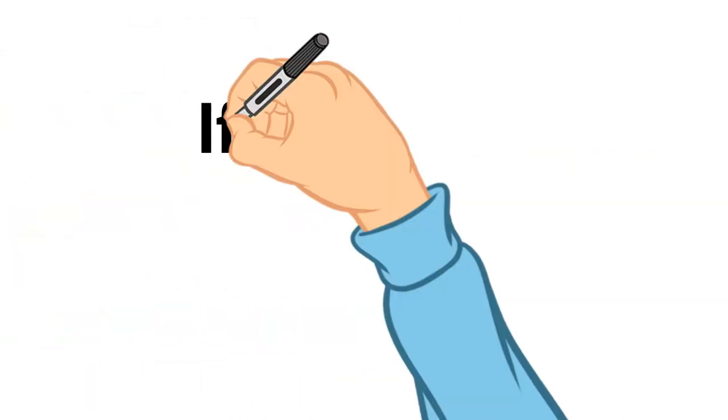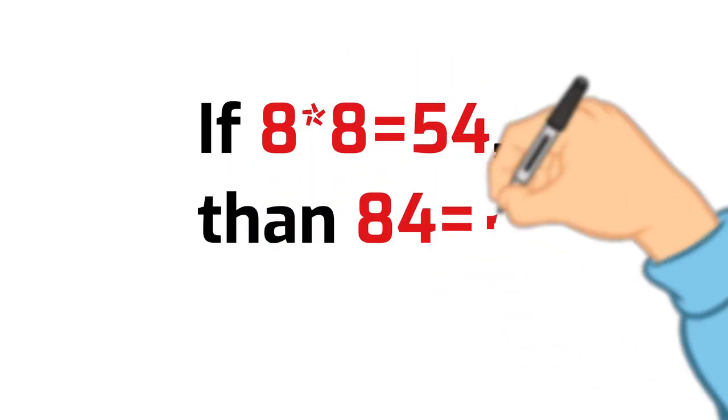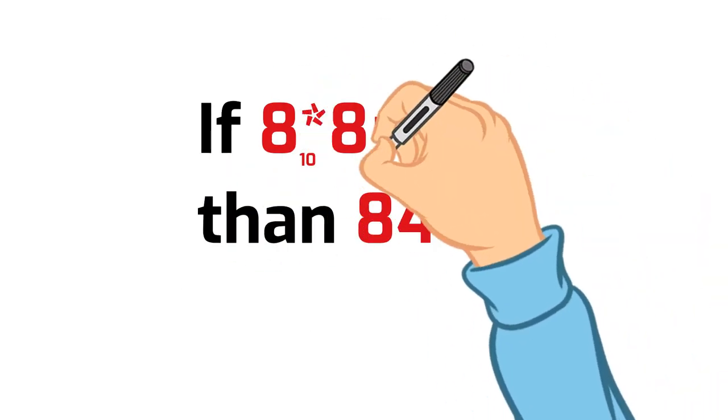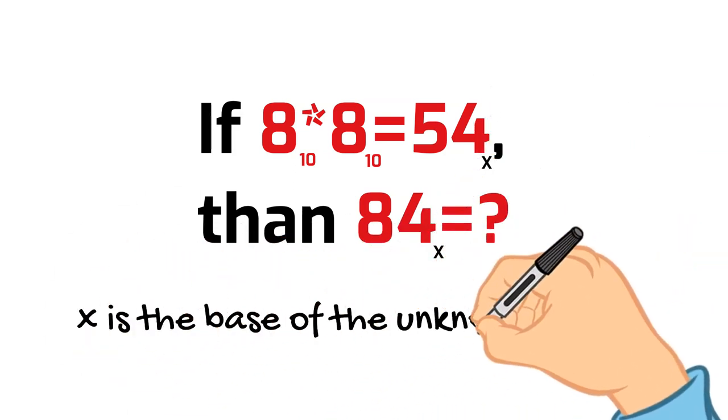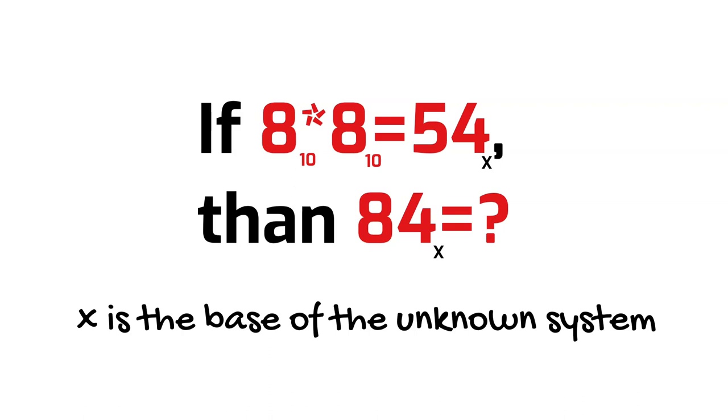Now let's come back to the original problem. As we can see, 8 times 8 are taken in decimal numeral system. However, the result of the multiplication is represented in a non-decimal system. Now we have to find the basis of this unknown system.